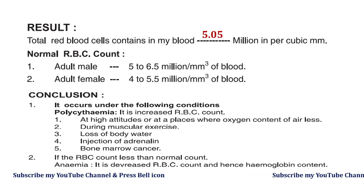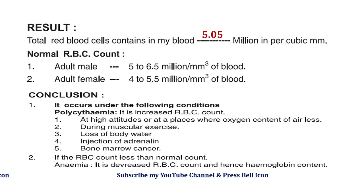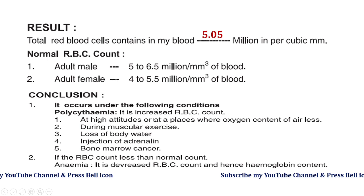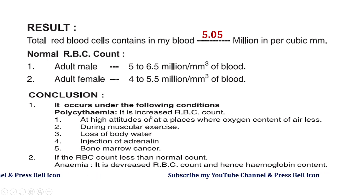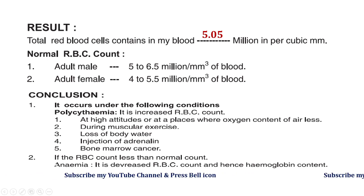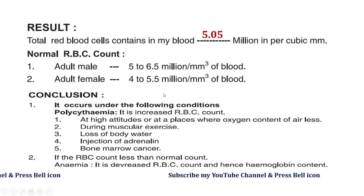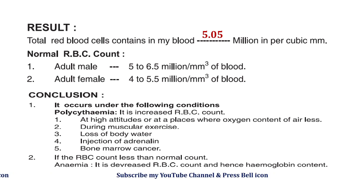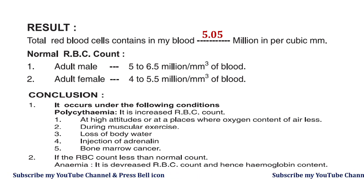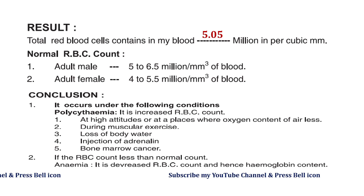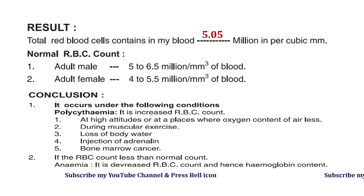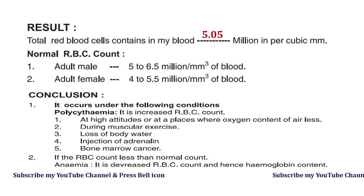Place the result value into the result sentence and compare your result with the normal RBC range. After comparison, conclude: if the value is above the range, it is called polycythemia; if below, it is anemia; and if the value is within the normal range, write that your own RBC count is normal. This is all about the RBC count experiment.